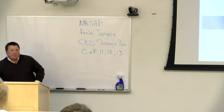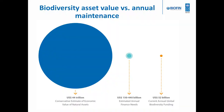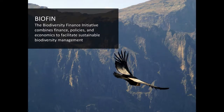So we've got $52 billion currently being spent, between $150 and $440 billion needed, against a total benefit value that is 1,000 times that. Infographically it looks like this: $52 billion what we're spending, $150 to $440 billion what we need, and this is the value. BioFin is in the business of figuring out this gap — combining finance, policy, and economics to facilitate sustainable biodiversity management.